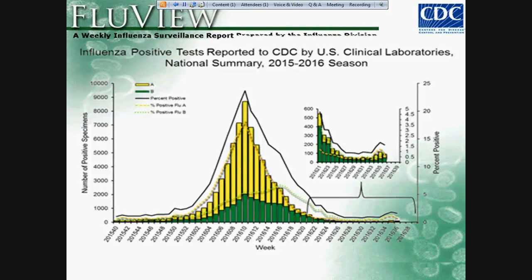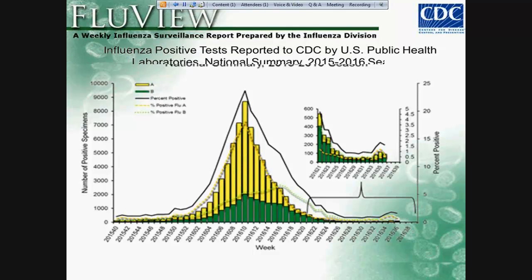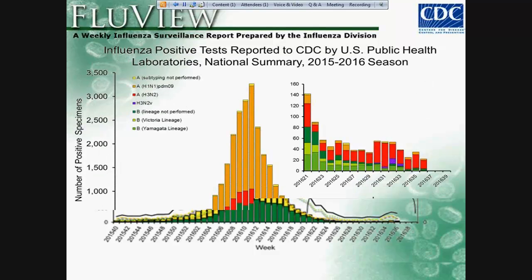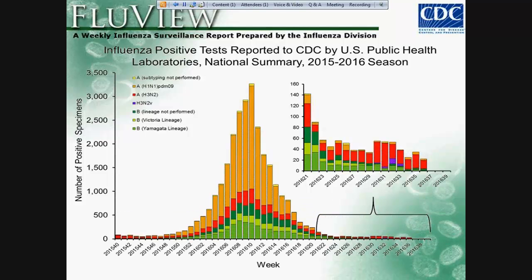The graph on slide 5 shows virologic surveillance across the U.S., showing influenza positive tests reported by CDC and by public health laboratories. The predominant strain last year was the influenza A, H1N1, PDM-09, or more commonly known as the 2009 pandemic strain.